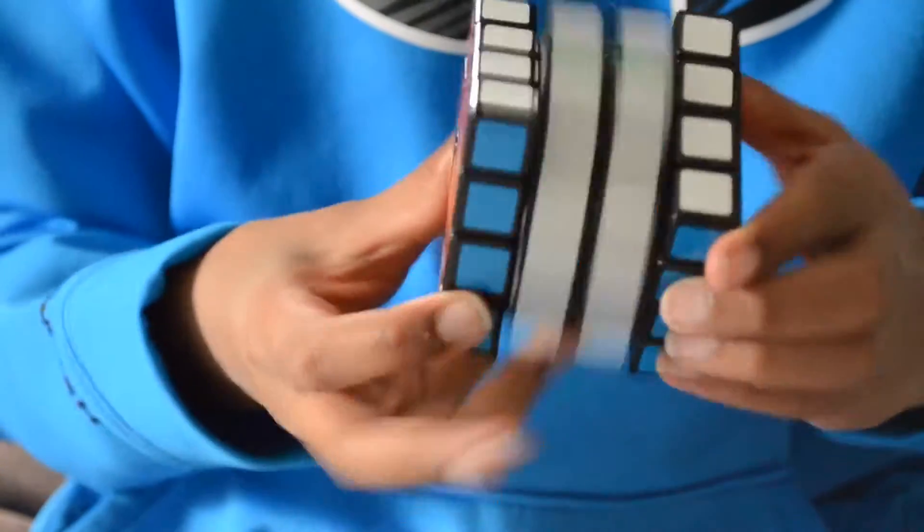Now, the turning is where things get great. This cube is very clacky, like a less scratchy MoYu. The cube is very smooth, with no scratchy feeling at all, and a slight bump.